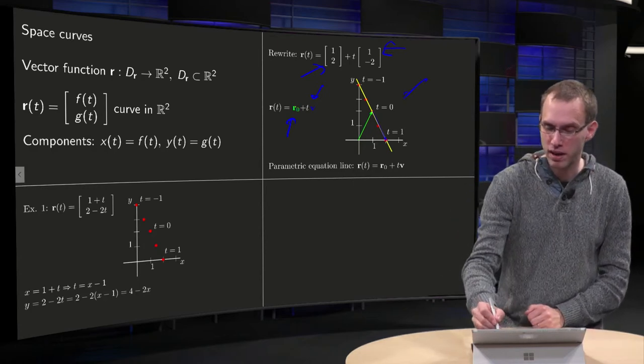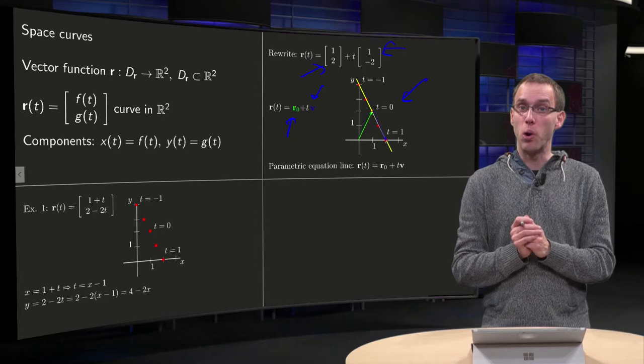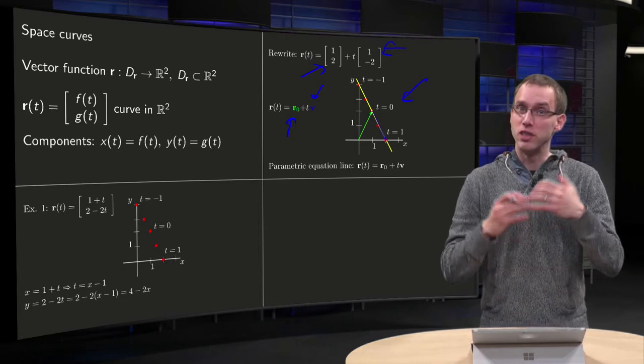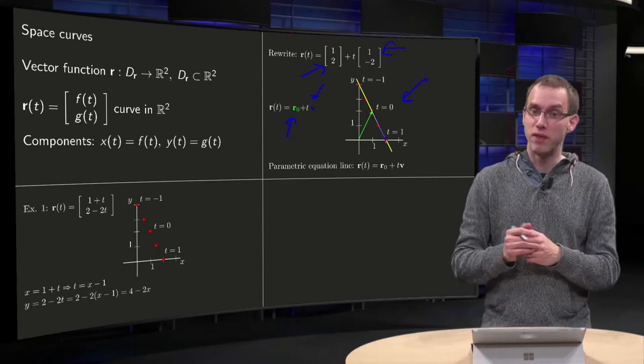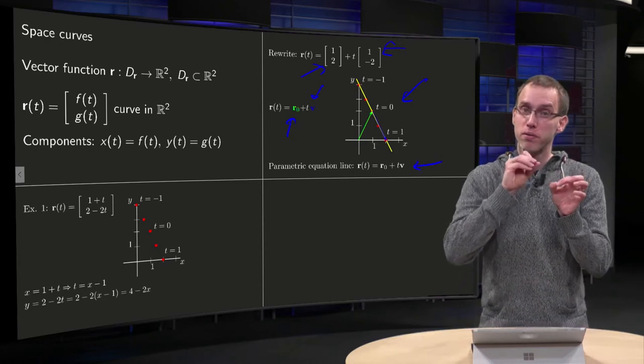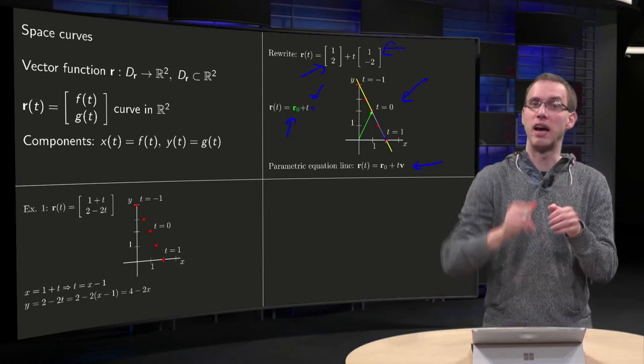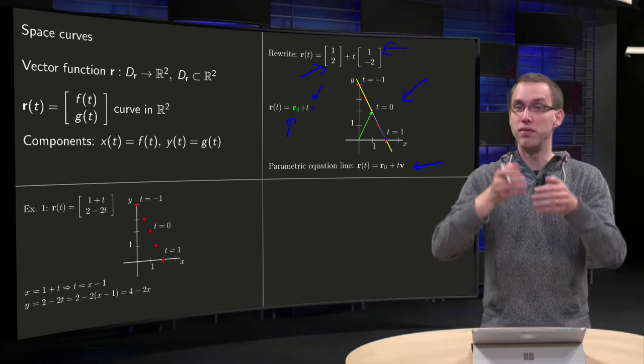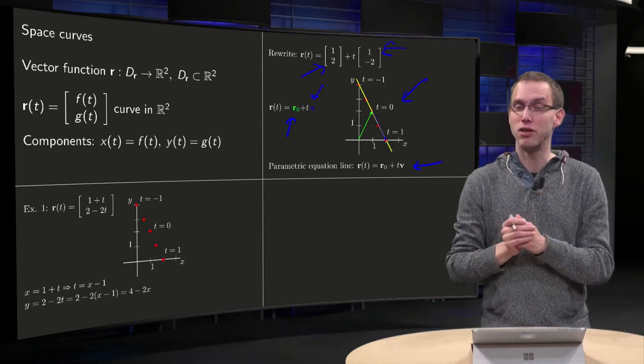You can see it in this figure over here, where the total line is drawn in yellow. So a general parameter equation of any line can be written as this. R0, a vector from the origin to any point on the line, plus T times V, where V is a vector in the direction of the line.